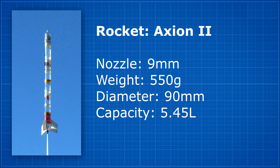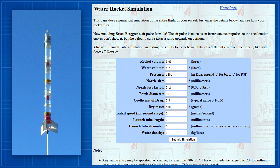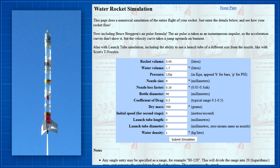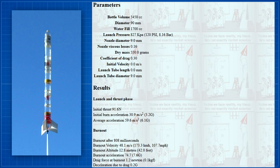Now let's have a look at some simulations where we vary the density of the liquid and see what the simulator predicts. For this we're using Clifford Heath's simulator. We first ran a number of simulations for this particular rocket that we fly quite often, and from past experience we know that this simulator is fairly accurate in predicting a rocket's flight performance.